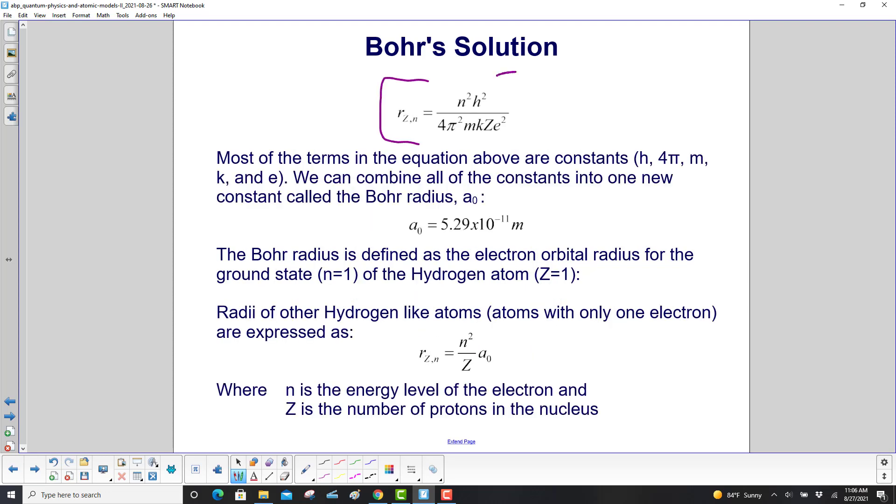Now, in physics, when you get an equation like this which has a lot of letters, you see if you can simplify it. Well, we can, because most of the terms are constants: Planck's constant, 4π, mass of the electron, Coulomb's constant, and charge of any electron. We'll combine all those constants into one new constant, called the Bohr radius, a₀.